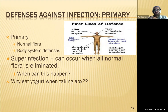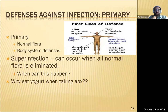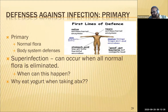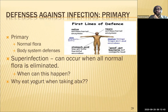Primary defense against infection — your body system defenses: mucus linings trap dirt and microbes. Gut bacteria overcrowd and don't allow bad bacteria to grow. Stomach acid kills bacteria. Skin is one of the best primary defenses — it's a big barrier with lots of dead skin on top that can't be infected. Saliva has enzymes as well. Superinfections occur when all normal flora is eliminated, which happens with cancer treatment, chemotherapy, or antibiotics.